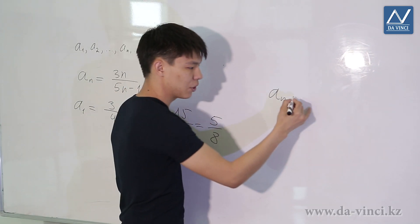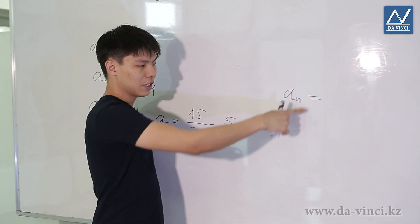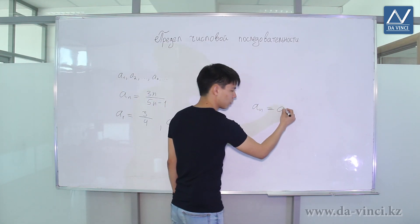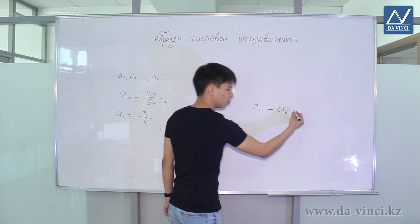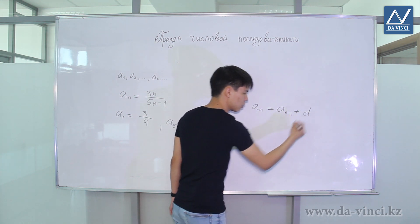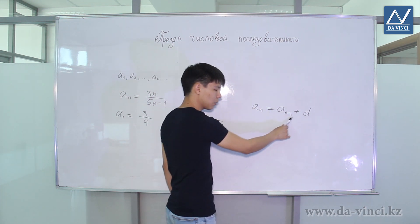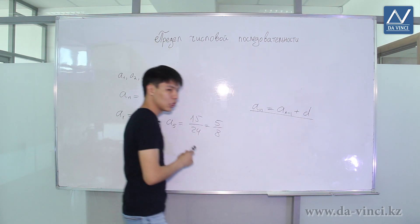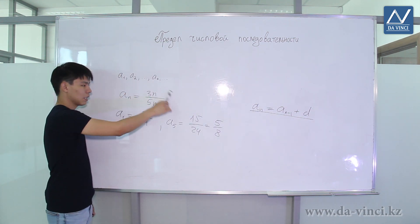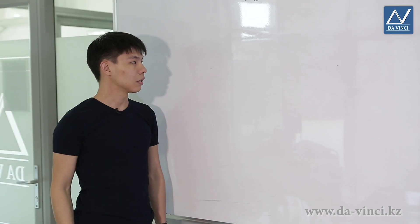For example, let's take a look at the arithmetic progression. Each element of the sequence is equal to the previous one plus some number, called the difference of the progression. So the Nth element is given through the previous one — such a relation is called recurrence. But we will work mainly with sequences given in the form of a ready-made formula.